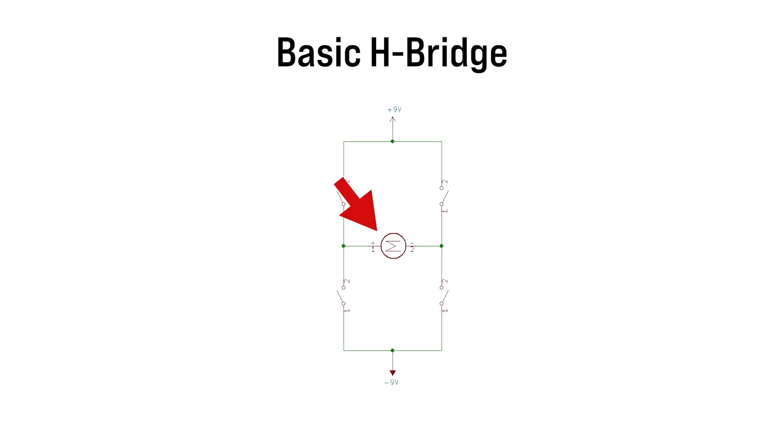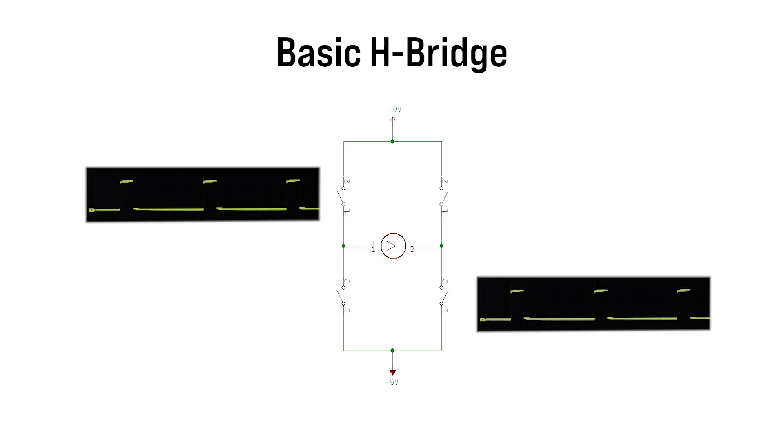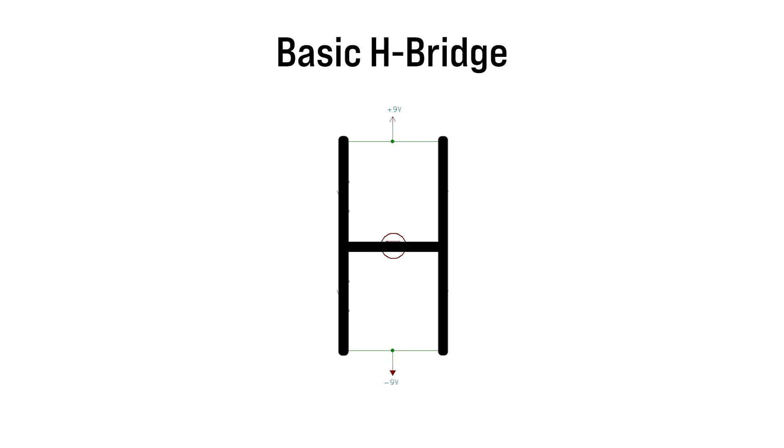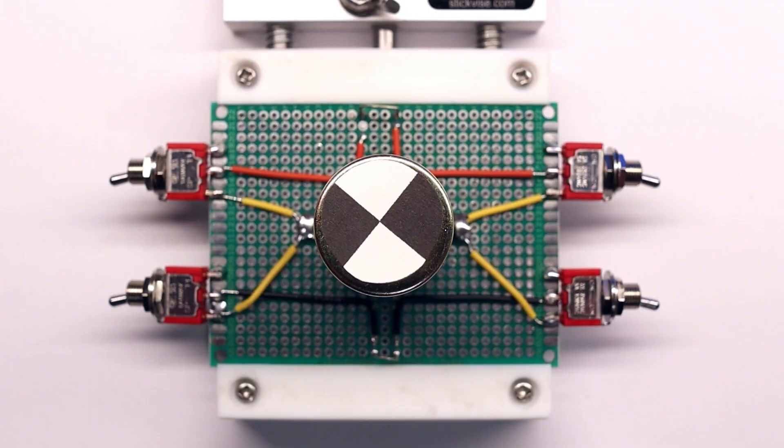An H-bridge is a circuit that allows us to control the direction of a motor by swapping the polarity of the voltage supplied to the motor's terminals. The polarity control is done by turning on or off certain transistors in the circuit, while the speed is controlled by applying a PWM signal to the transistors. It just so happens that the connections and switches form the letter H. Engineers are a creative bunch, aren't they?